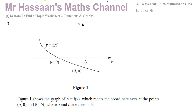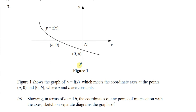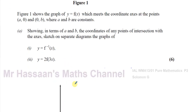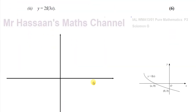We are given a sketch of the function y equals f of x, and we can see where it meets the coordinate axes at the points (a, 0) and (0, b), where a and b are constants. We need to sketch the graph of y equals the inverse of f of x, and y equals 2 times f(3x), showing the coordinates of any points of intersection with the axes.